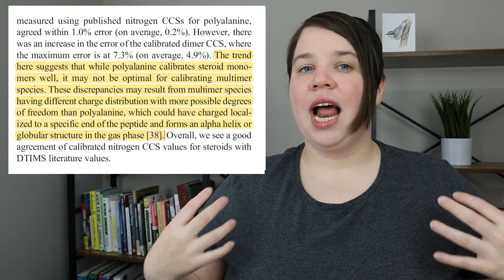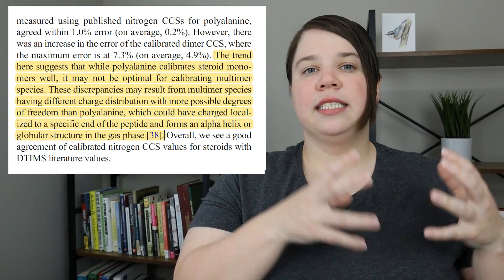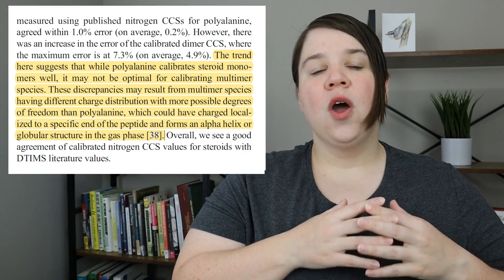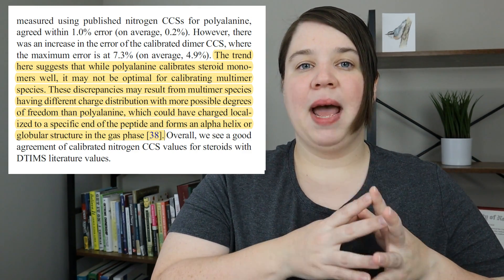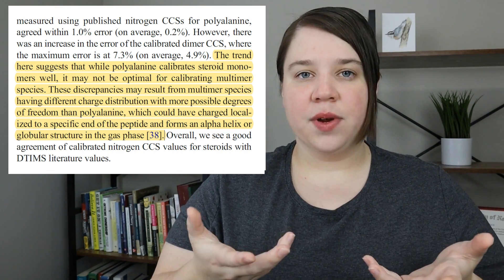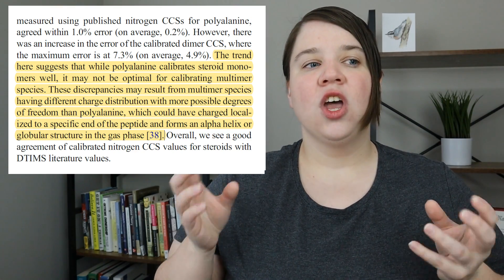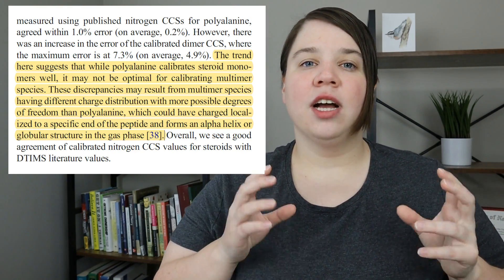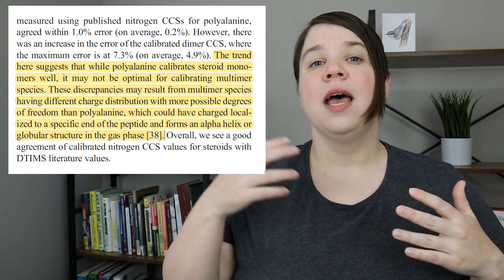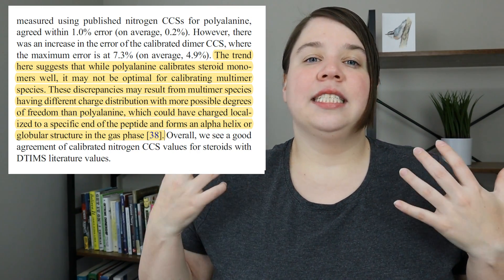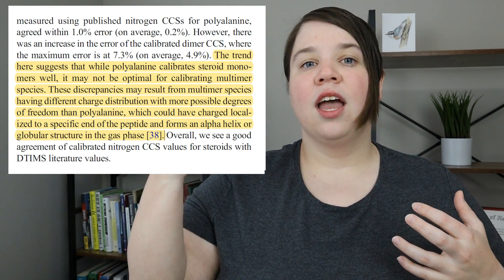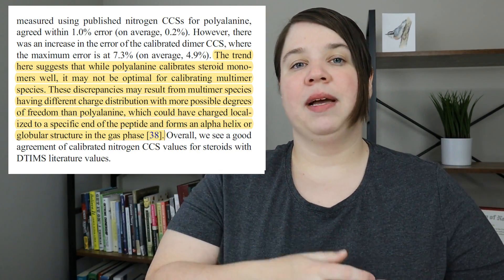From what I pulled from the literature, it seemed that having a biomolecular match or a gas phase conformation match in my calibrant and my analyte is what leads to the most accurate collision cross section measurements. So if my collision cross section measurements are accurate in monomers — which is what my calibrant was — but not in dimers, then it's likely because I need some form of multimeric calibrant to accurately measure dimers.